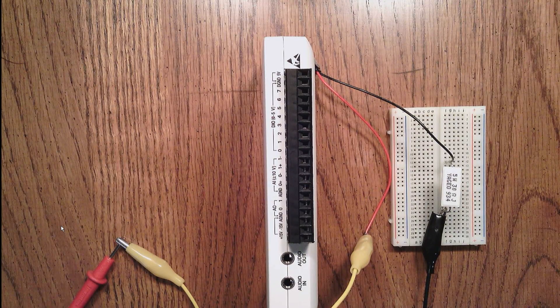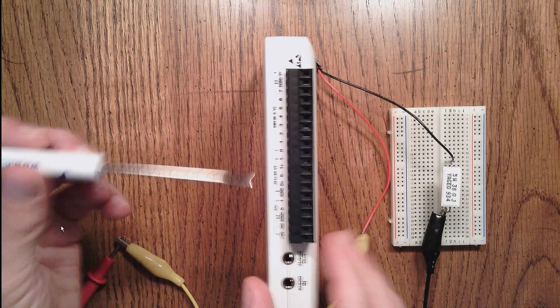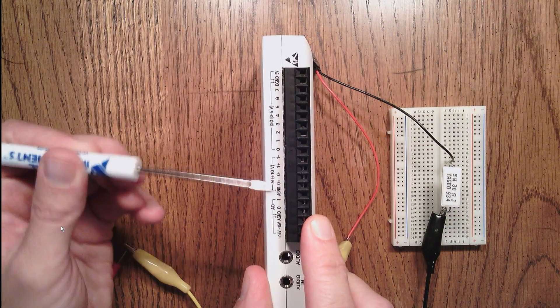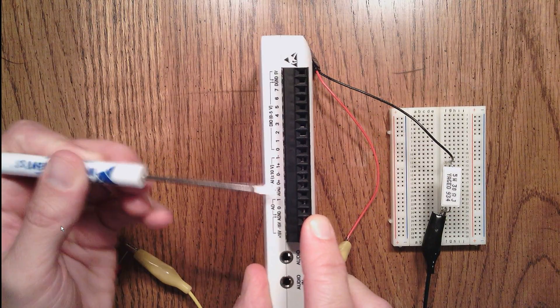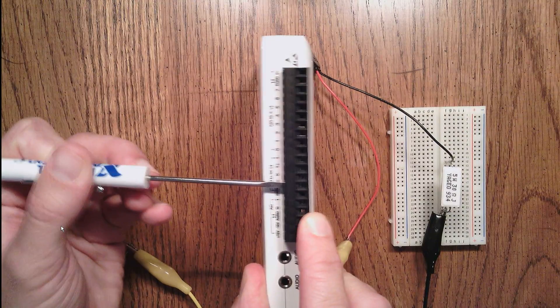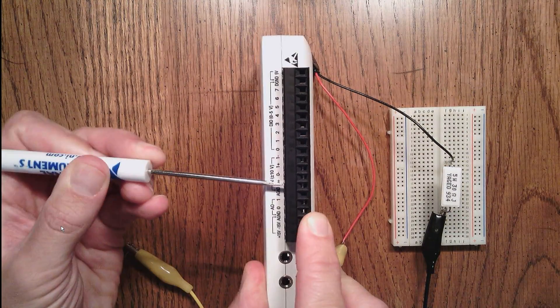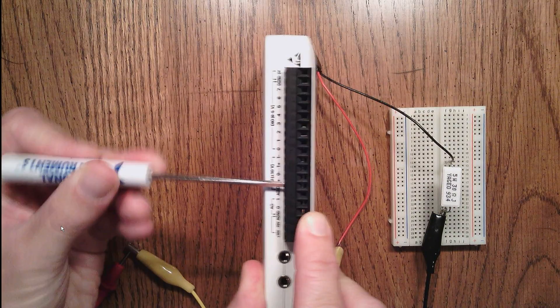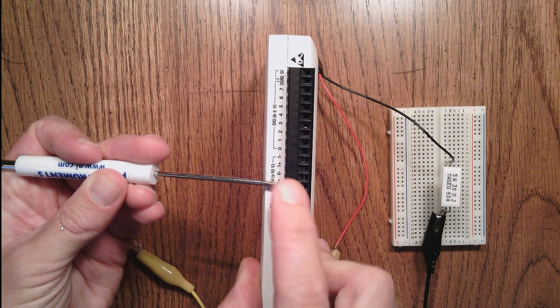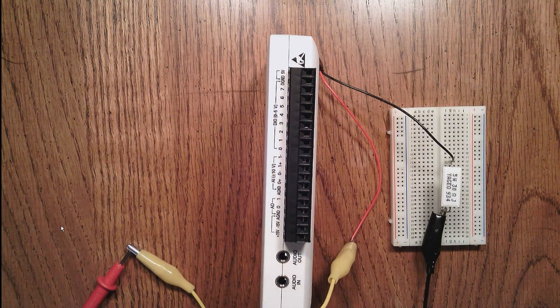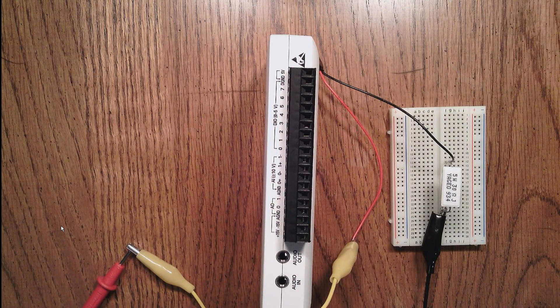So I'm going to use the screwdriver to open up those yokes so that I can insert the wire into that channel. And as I unscrew this, the yoke will drop down so that I can insert the wire into that spot.